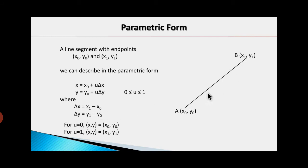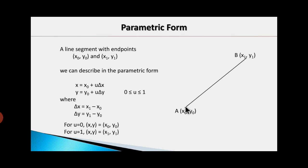If you want to find the point in the middle of the line, you put u=0.5. So u is telling you how far you are from the starting endpoint — it gives the equation of a line in parametric form. Since the Liang-Barsky algorithm uses the parametric form of the line, that is why we are studying this parametric form.